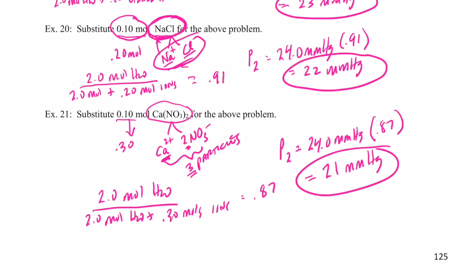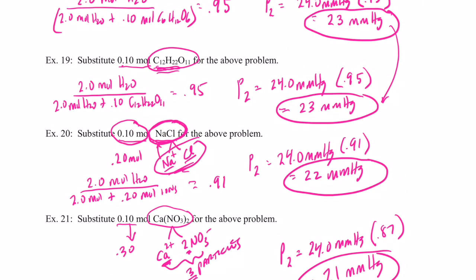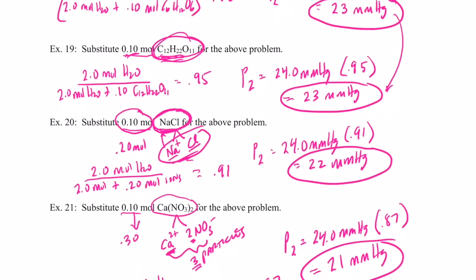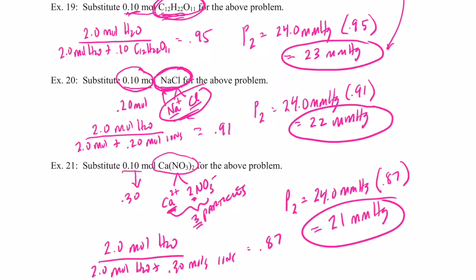So we have to be a little careful. If it's non-ionic — like glucose or sucrose — you get just one mole of particles per mole of molecule. But when it's ionic, we have to check how many moles of ions are made when the solute dissolves in the solvent.